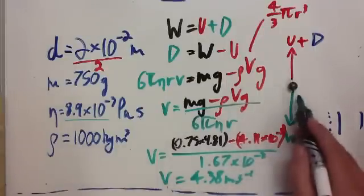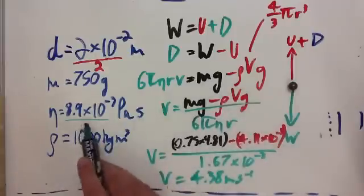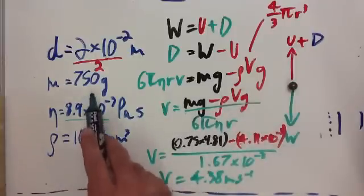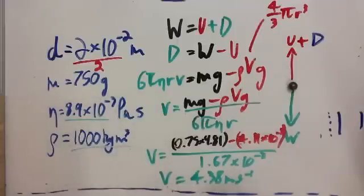So, this terminal velocity of this sphere falling in fluid of this viscosity, the fluid has this density, will travel at 4.38 metres per second at terminal velocity. Thank you.